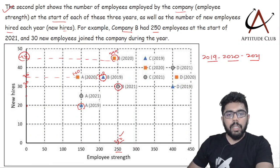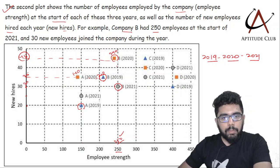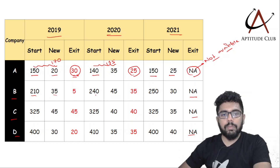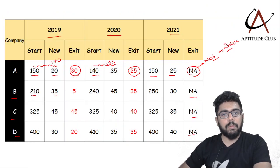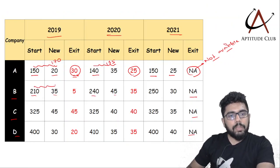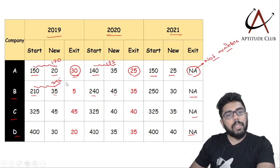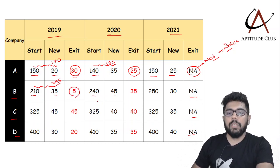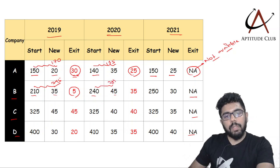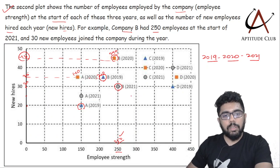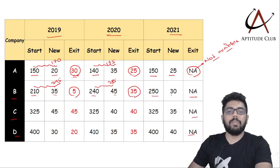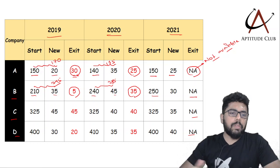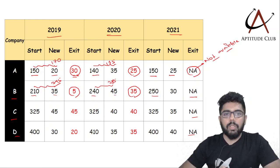For company B: in 2019, B has 210 employees and 35 join. In 2020, B has 240 employees and 45 join — total should be 285, but next year B starts from 250, meaning 35 employees left. We continue this process for C and D as well in exactly the same manner.